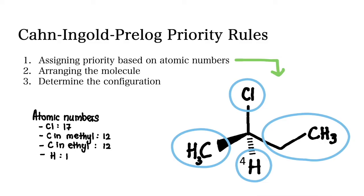And finally, hydrogen gets the lowest priority group, which is number four.